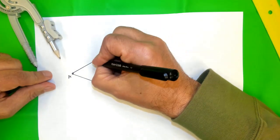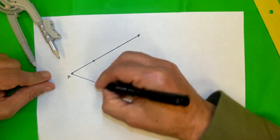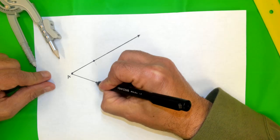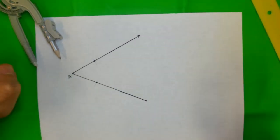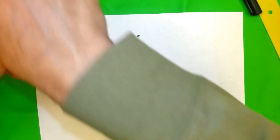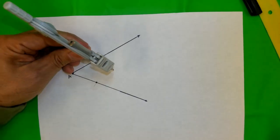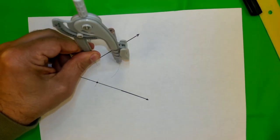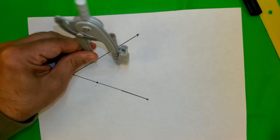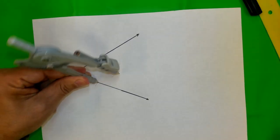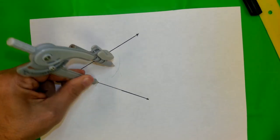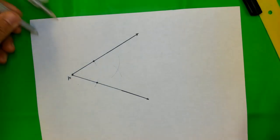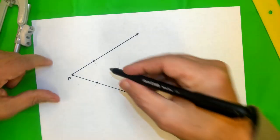I'm going to mark these two points, just to be sure we can see them. Okay, now keep the compass the same way, or you can change it, but I will say keep it the same way, and draw two more arcs.